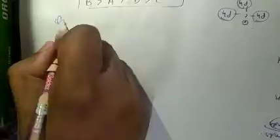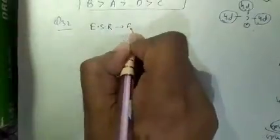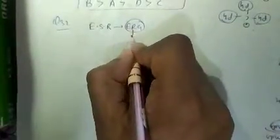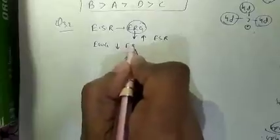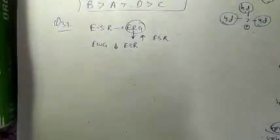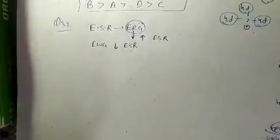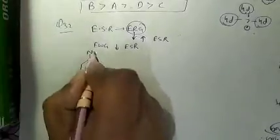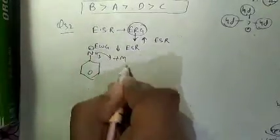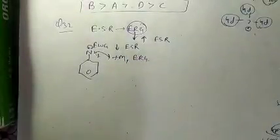In question number 32 we are looking for the correct order of reactivity towards electrophilic substitution. Electron releasing groups increase electrophilic substitution reaction while electron withdrawing groups decrease it. Aniline contains NH2 which is a +M group, an electron releasing group, so it increases the electrophilic substitution reaction.